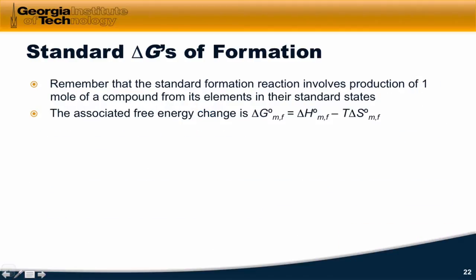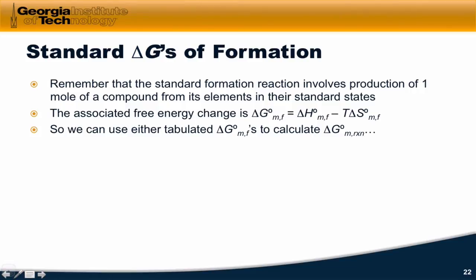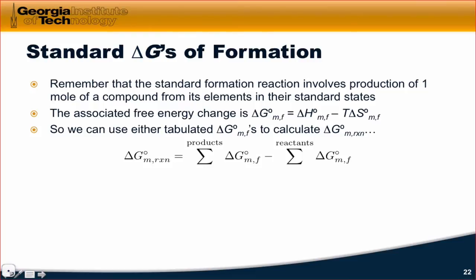The standard formation reaction involves production of 1 mole of a compound from its elements in their standard states under standard conditions. But we can also write these free energies of formation in terms of enthalpies of formation and entropies of formation. So we can either use tabulated or previously found free energies of formation to calculate the free energy of reaction — the idea of products minus reactants that we've seen before. It's important to respect stoichiometry, so multiply by your stoichiometric coefficients as you're adding up delta G of formation for products and reactants.